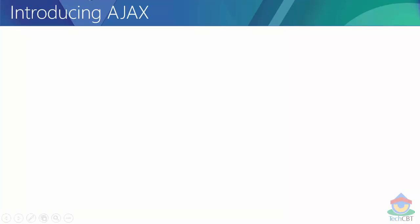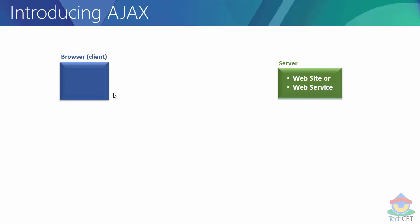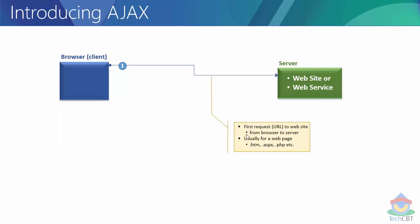First of all, let us see what exactly Ajax is. Imagine I have a web server which is serving a website or a web service. I have a browser which is going to try to access any kind of web page from that website through the browser. The browser becomes the client and our web server becomes the server. The request is going to be initiated from the browser to the server — something like typing www.google.com or yahoo.com. The moment we type the URL, the request actually goes to the server, in the form of a URL.